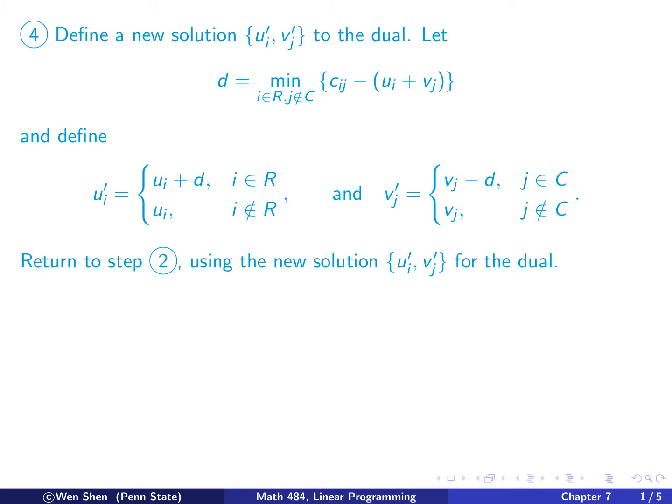And now once you have defined the d, that is the one you will use to adjust the solutions of the u_i and v_j. For the u_i prime, if the i is in the set R, I will add d on top of u_i. I will increase it. And if i is not in the R, u is unchanged. And for v, a kind of a complementary thing happens. For j that is in C, I will subtract d from the v_j to form the new one. And if j is not in C, then v is unchanged.